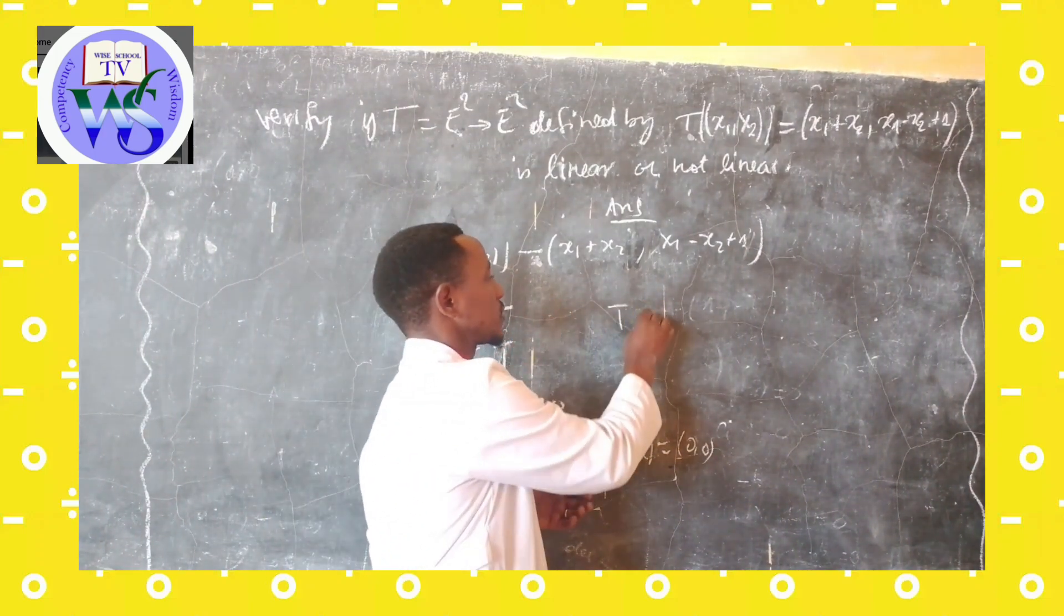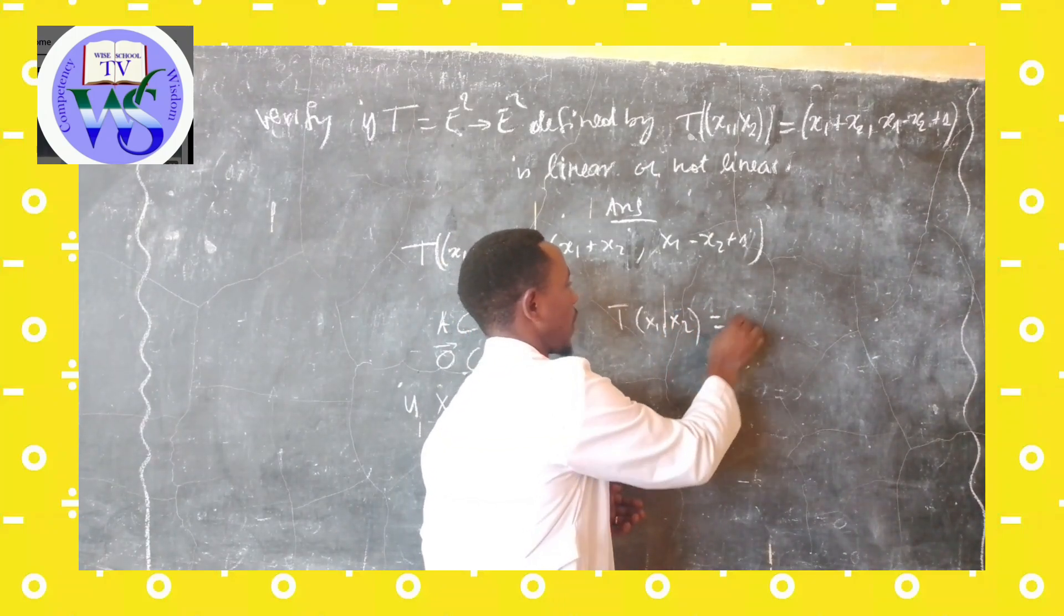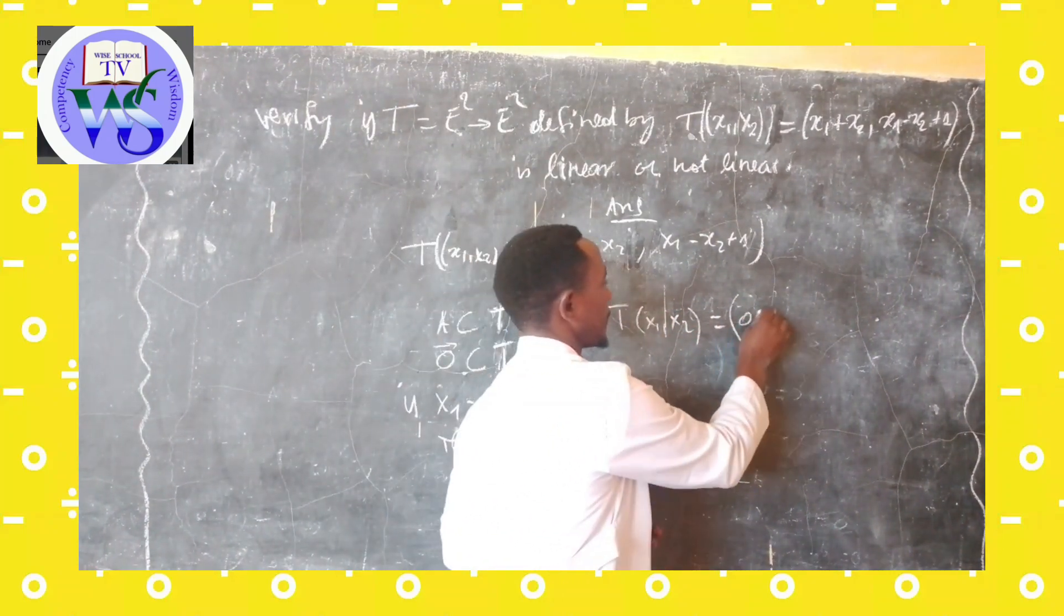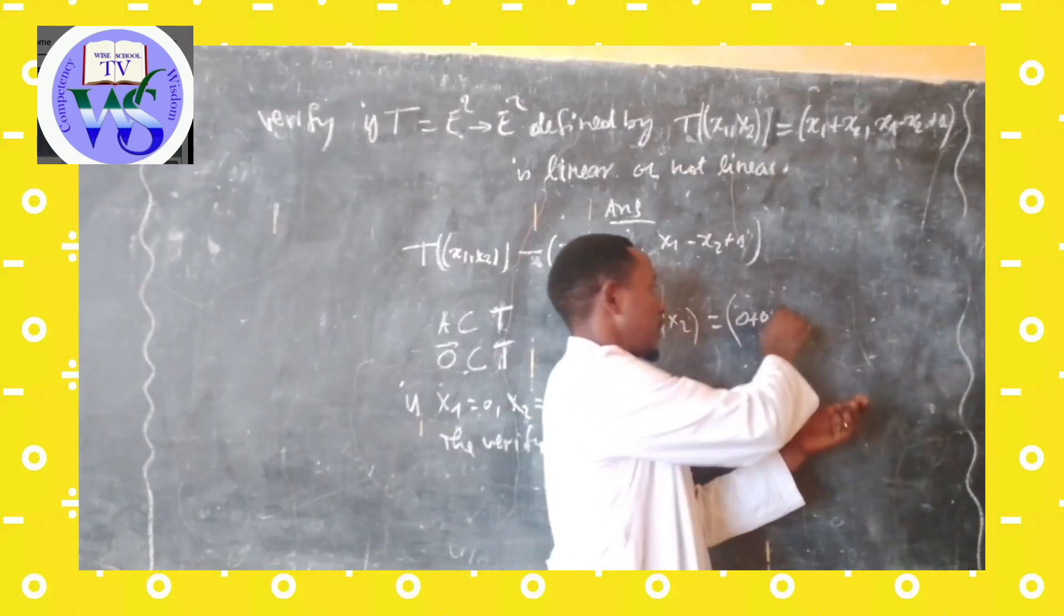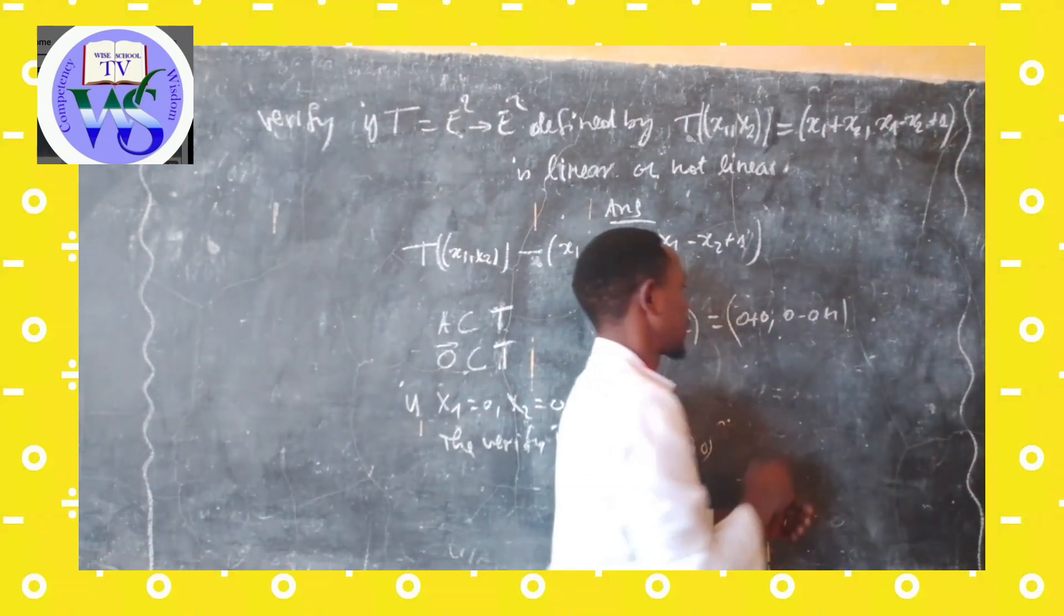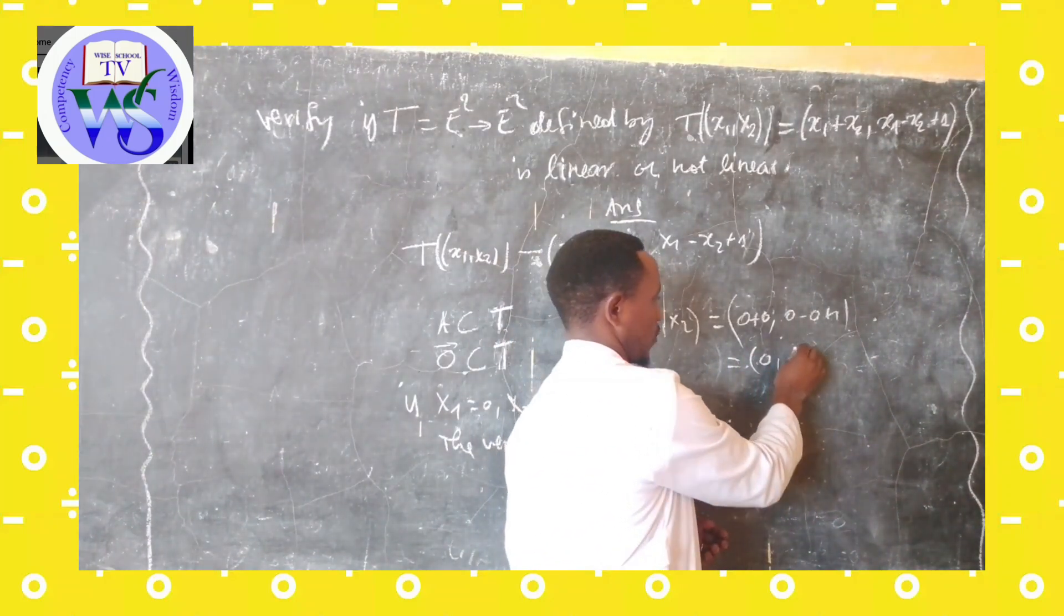So this transformation T(x1, x2), when x1 equals zero and x2 equals zero, is equal to zero plus zero, then zero minus zero plus one. So this equals zero and 1.